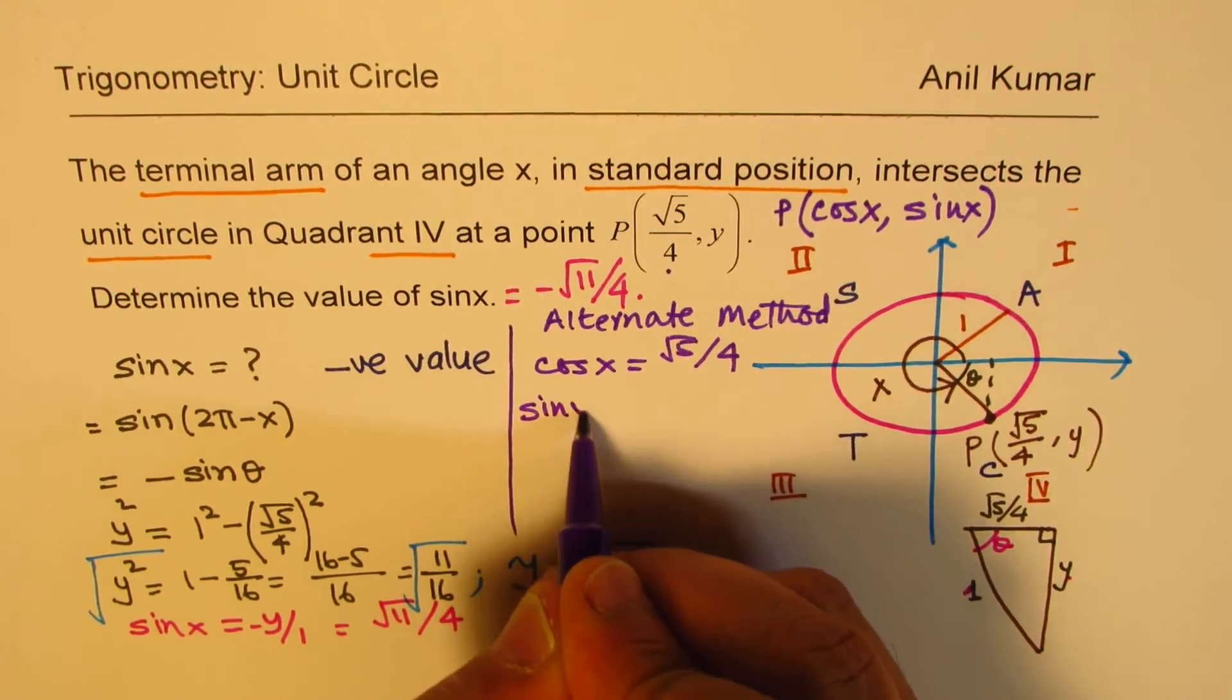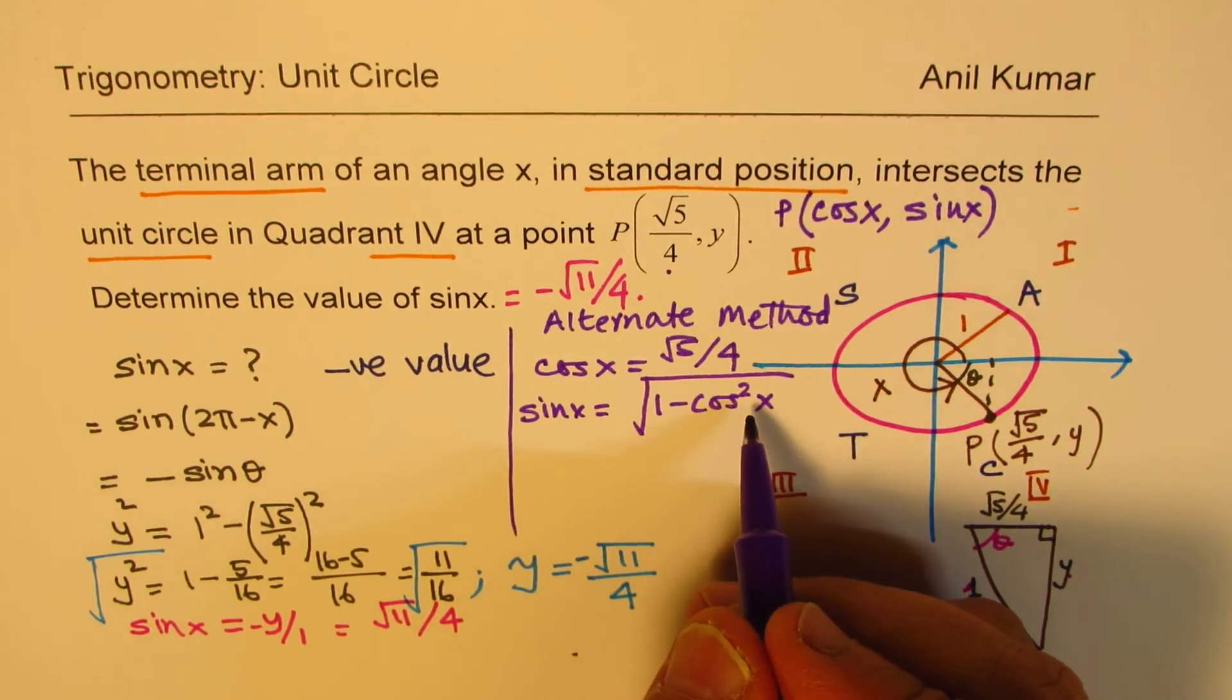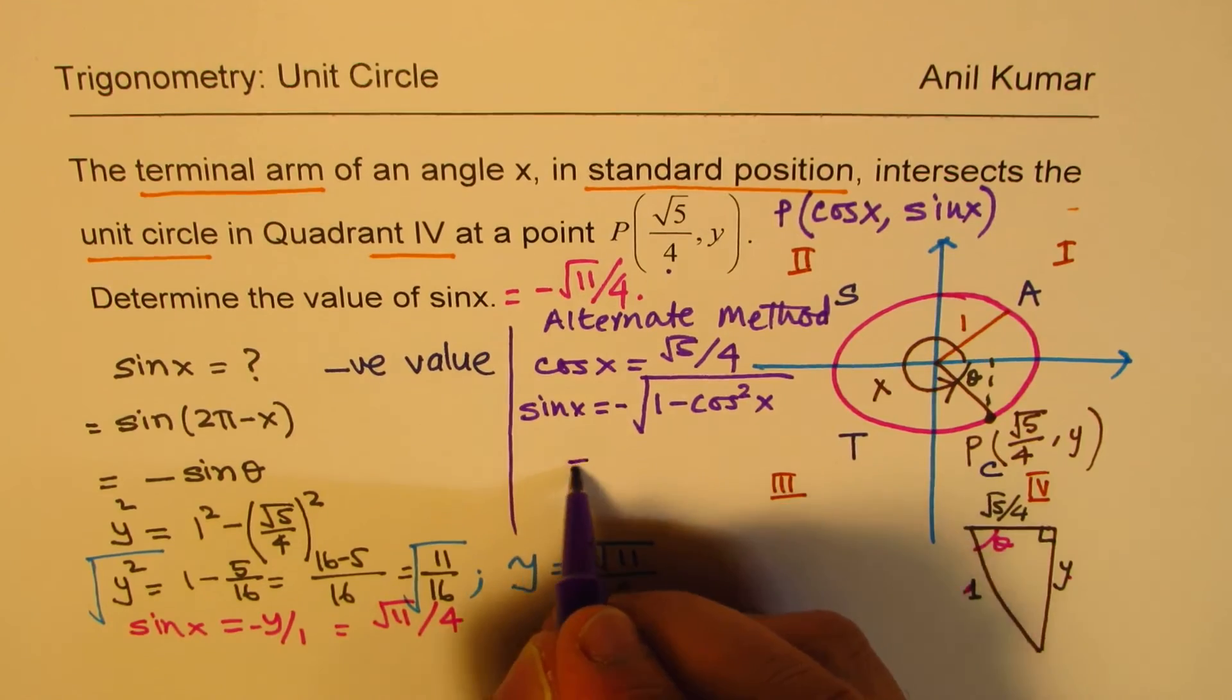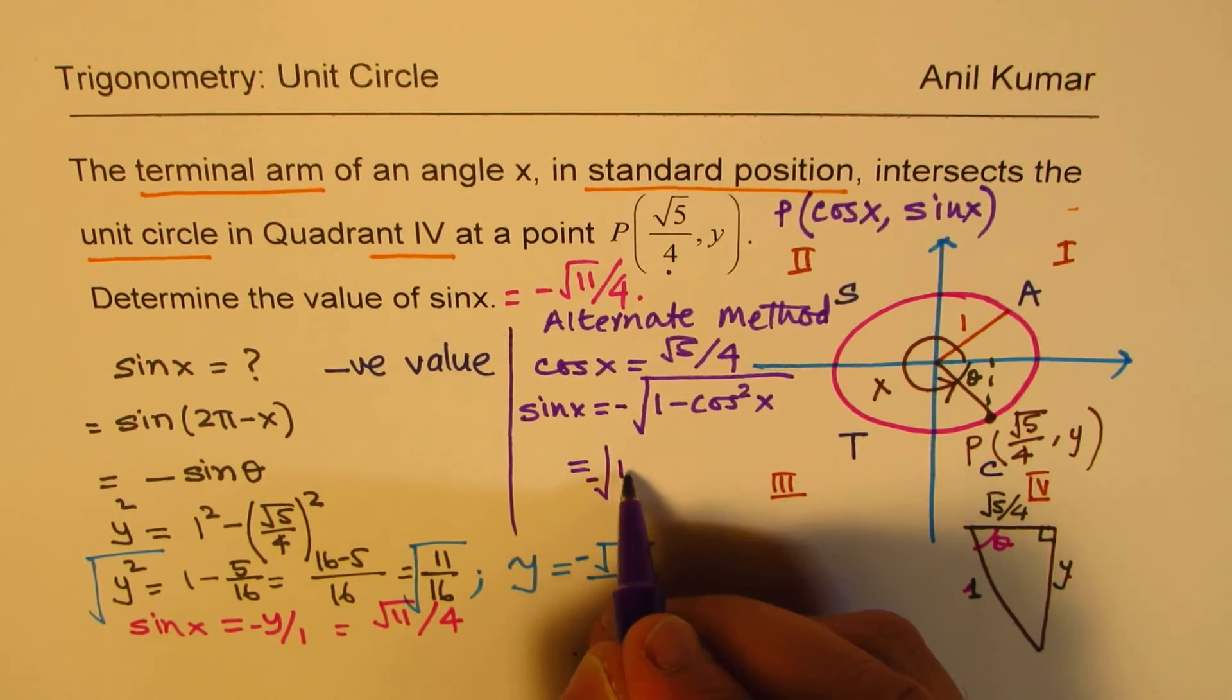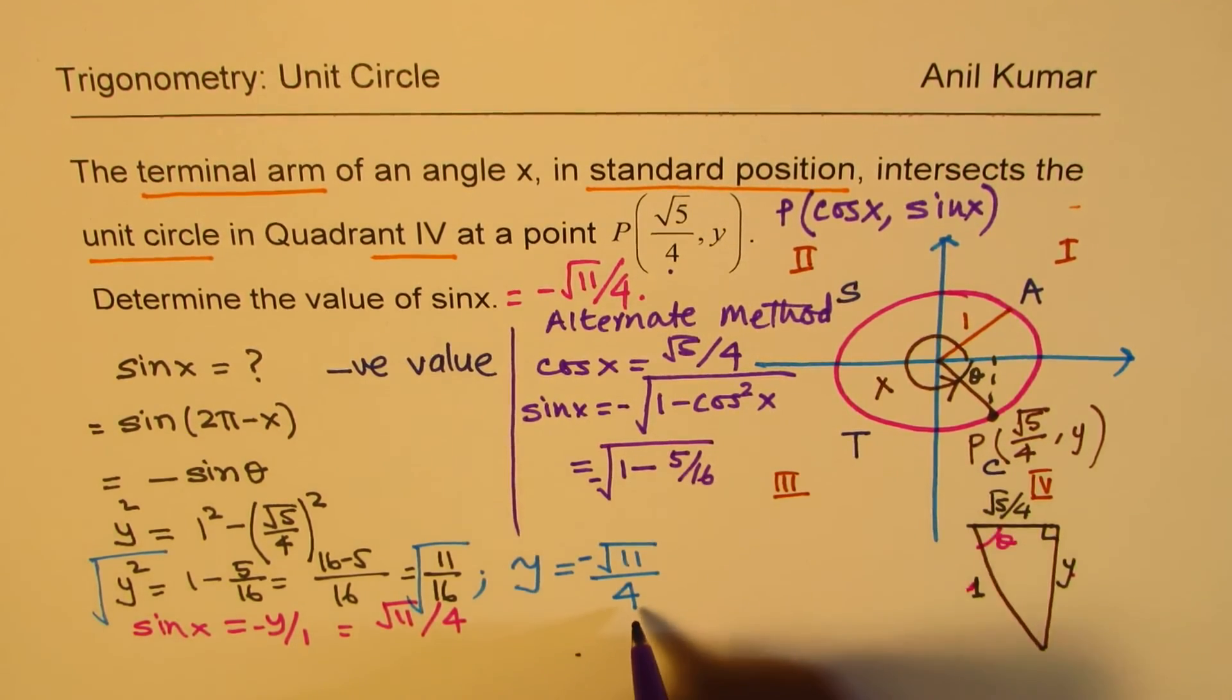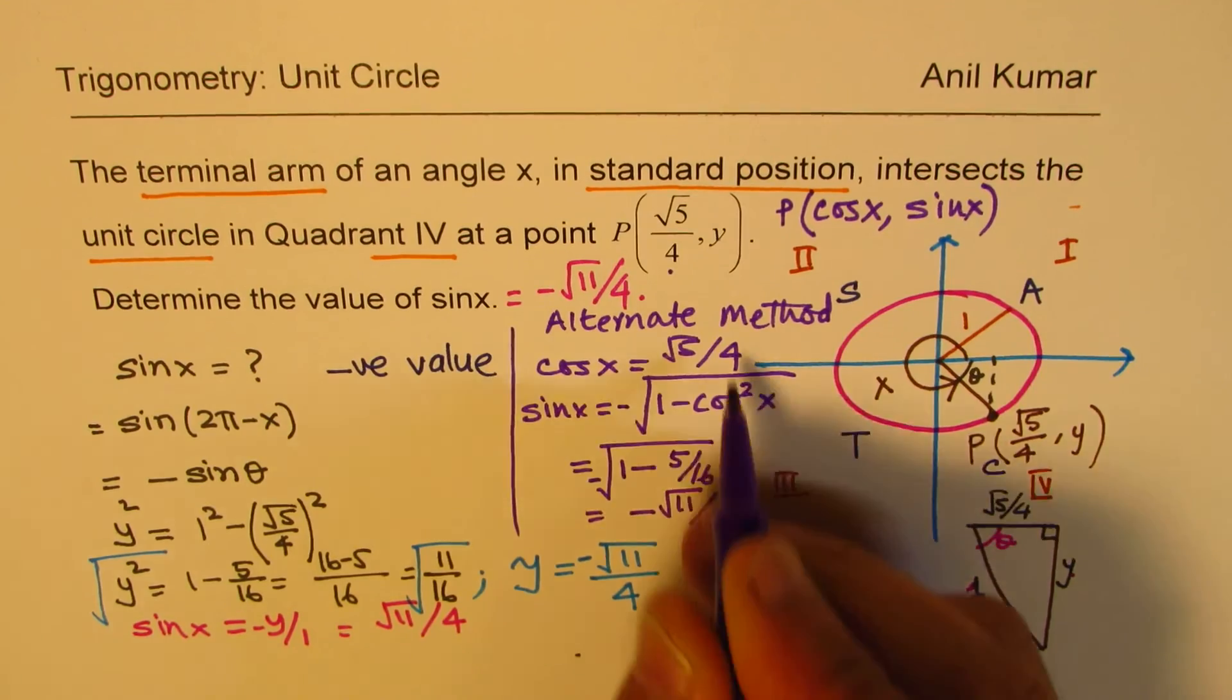Sine X will be equal to square root of 1 minus cos squared X, because sine squared X plus cos squared X is 1. Since you are in quadrant 4, it has to be negative. So we get the value of sine X as negative of 1 minus square of this, which is 5 over 16. Straight away, we get our answer, which is negative square root 11 over 4.